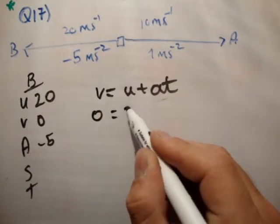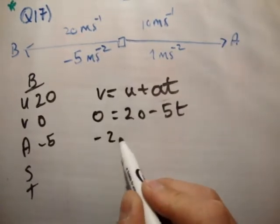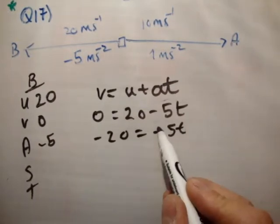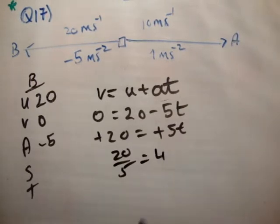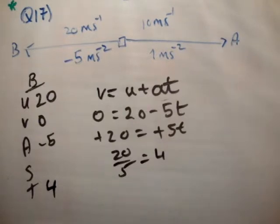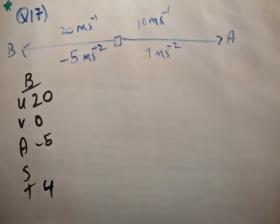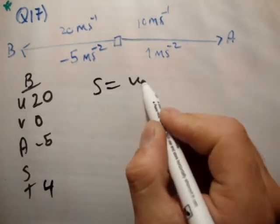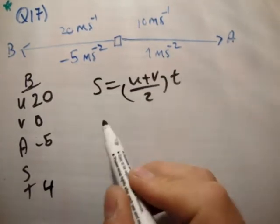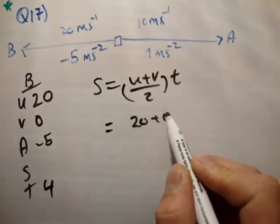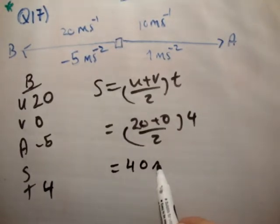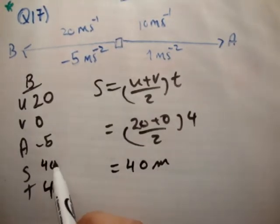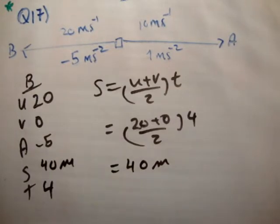So, 0 is equal to 20 minus 5T. When it's 20, it's equal to minus 5T. Negative, negative, you can turn it into a positive. 20 over 5 is equal to T is equal to 4. So the time is 4 seconds. Next, we'll do the distance. So, I'm going to say S equal U plus V over 2 times T is equal to 20 plus 0 over 2 times 4. So, that's 10 times 4 is equal to 40 meters. That's pretty straightforward.